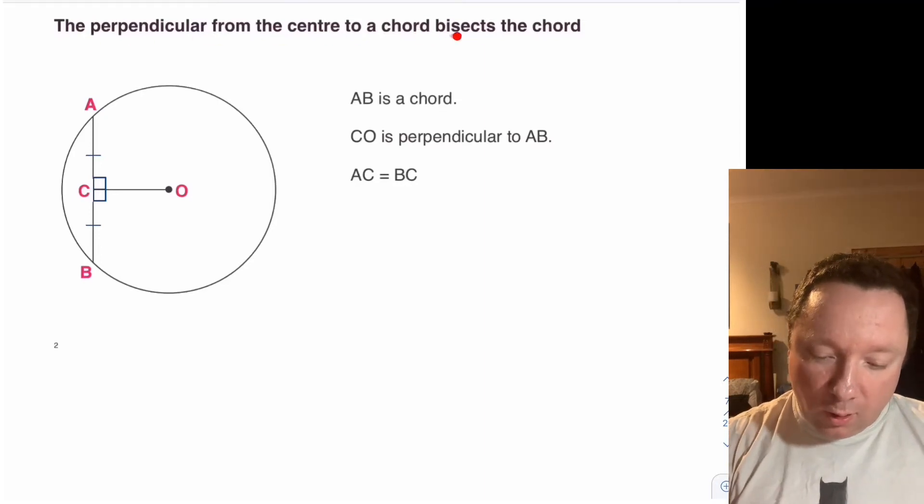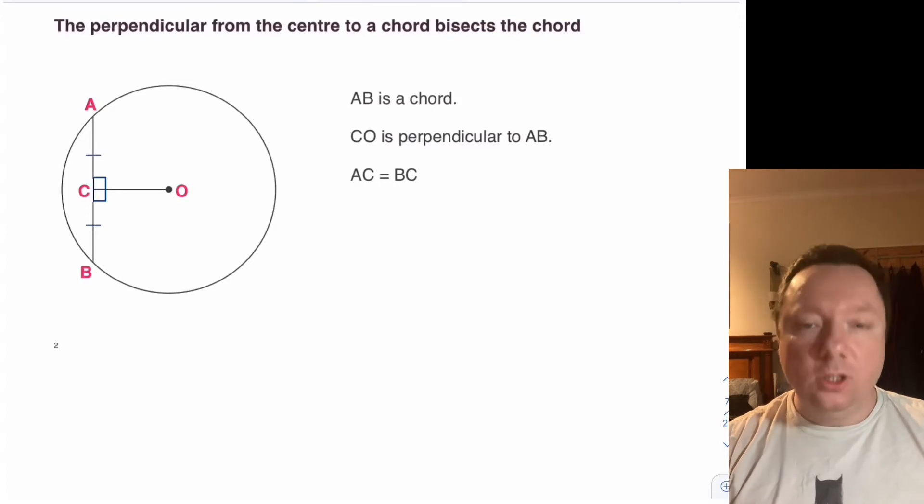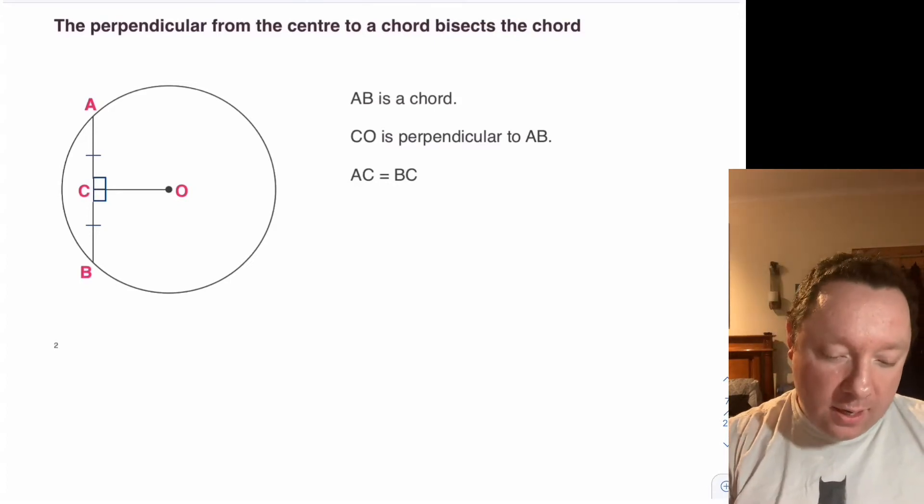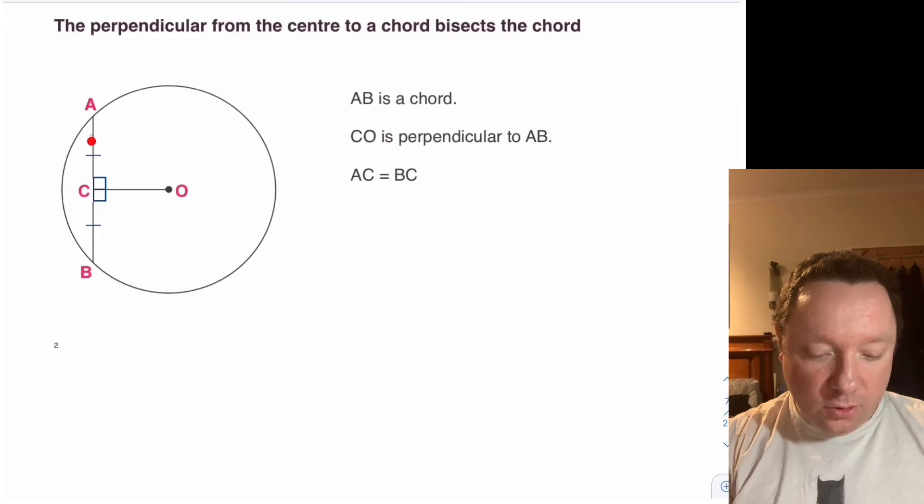The perpendicular from the centre to a chord bisects the chord. Just a little bit of terminology to remember. Any line, this line A and B is called a chord—it's a line that goes through a circle and touches at two points but not the diameter, not through the middle.